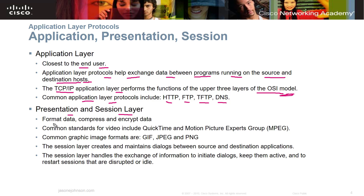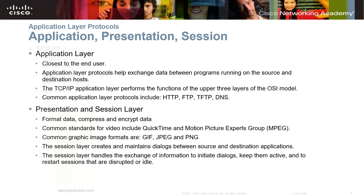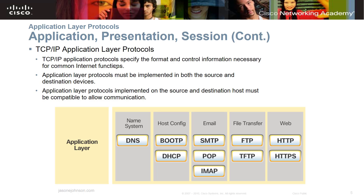The presentation and session layers format, compress, and encrypt the data, then pass it down. Common standards for video include QuickTime and MPEG; common graphic image formats include GIF, JPEG, and PNG. The session layer creates and maintains dialogues between source and destination applications, handling the exchange of information to initiate dialogues, keep them active, and restart sessions that are disrupted or idle. TCP/IP application layer protocols specify the format and control information for common internet functions and must be implemented on both source and destination devices to allow communication.